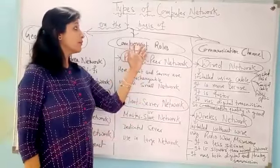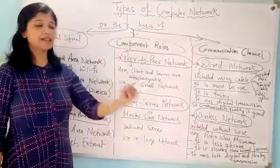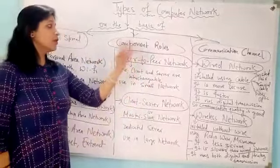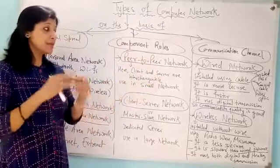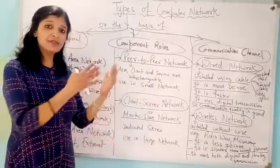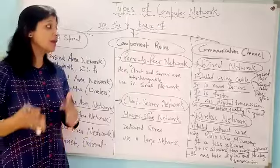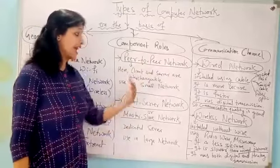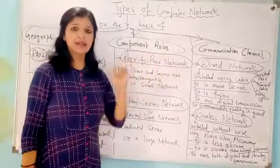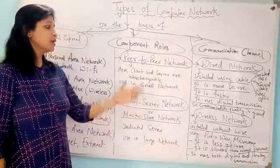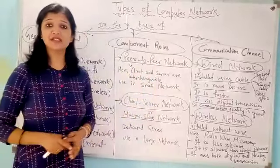As you know, the computer network has two components: one is the client and another is the server. When the client and server are not separated — meaning it is not visible which machine is the client and which is the server — or the roles can be shared and interchangeable, it is known as peer-to-peer network. Small networks are predominantly peer-to-peer networks because there is no dedicated server.